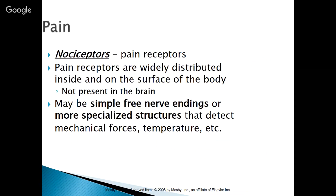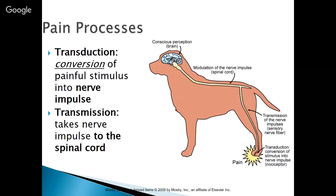Pain comes from nociceptors — pain receptors. Pain receptors are widely distributed inside and on the surface of the body, but they are not present in the brain itself. There may be simple free nerve endings or more specialized structures that detect mechanical forces, temperature, etc. This is important to realize because many diseases we encounter cause pain, and we need to know what we can do to eliminate or limit it.